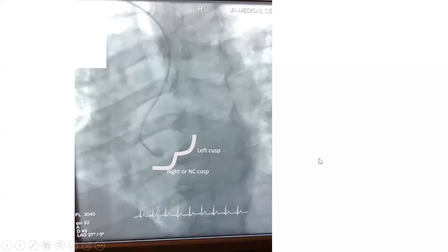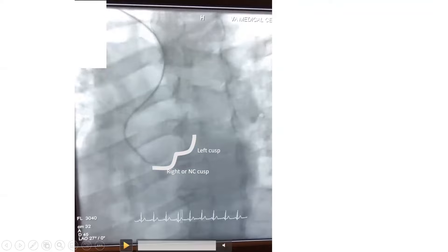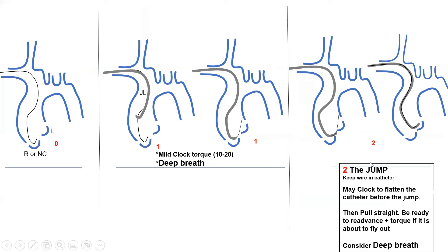Here is an illustration of flattening: you clock and flatten the catheter, then just pull without additional torque. However, there is a critical point — as you're pulling, your catheter may start to fly up or loop on itself. You have a fraction of a second to react: immediately push the catheter back down, give it a torque — more commonly clockwise — then try again to pull. If it flies back again, react immediately, push it down, try counter-clockwise this time, and pull again to jump to the left cusp. Be ready to re-advance plus torque if it is about to fly out.